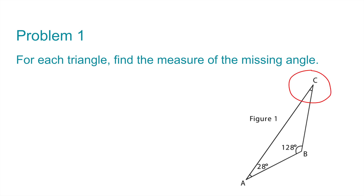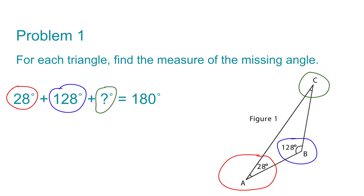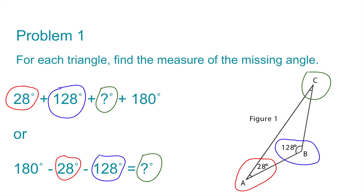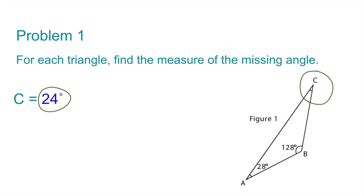The missing angle in figure 1 is angle C. Angle A is 28 degrees, so 28 degrees plus angle B, or 128 degrees, plus the missing angle C will total 180 degrees. We can also write this as 180 degrees minus 28 degrees minus 128 degrees equals the missing angle C. So, 180 minus 28 minus 128 equals 24, and the missing angle C has a measure of 24 degrees.